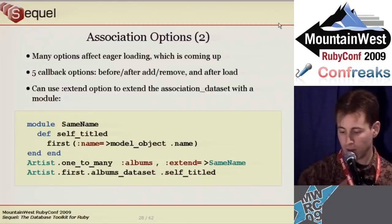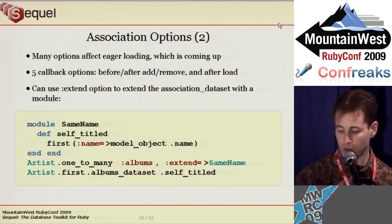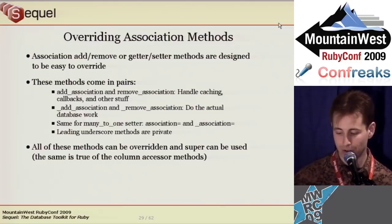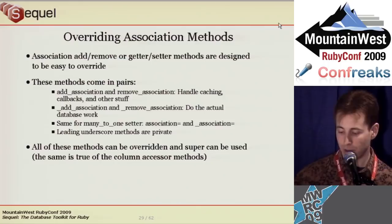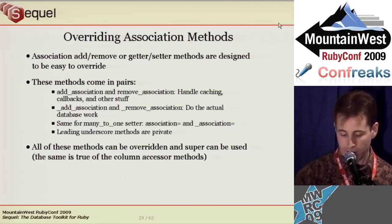Many of these options affect eager loading. Sequel provides the same association callbacks as AR, and also adds an after_load callback, which I use in an accounting app to figure out if the associated entry is a debit or credit to the current account. You can also use the extend option to extend the association dataset with a module. Since Sequel is a toolkit, flexibility is important, so the added methods are easy to override — you just override them and call super, no aliasing required. The modification methods are split into public and private parts: the private method starts with an underscore and does the query; the public method handles caching and callbacks.